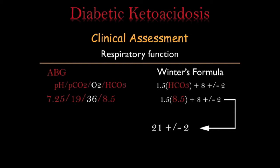We just need to know if this number falls within the acceptable range, and it shows that it does — 21 plus or minus 2, and the patient's PCO2 was 19. Now, the important part: what if that patient's PCO2 was 27? This is higher than expected, meaning the patient is holding on to CO2 and is not compensating. This is a failure of compensation, which is a very serious finding — it is a sign of impending respiratory failure. So this patient may need to be intubated in the near future.